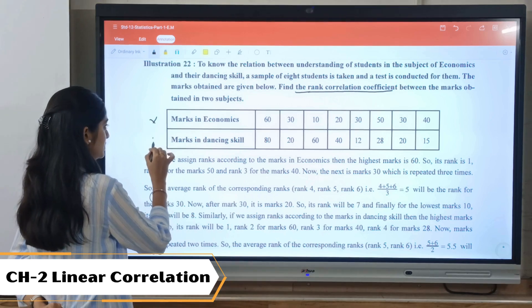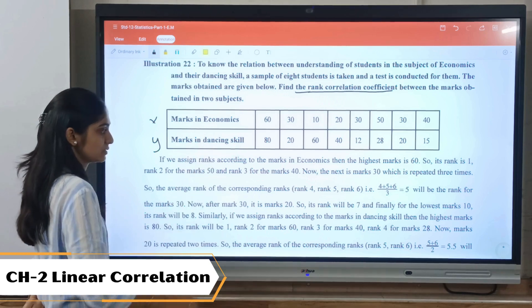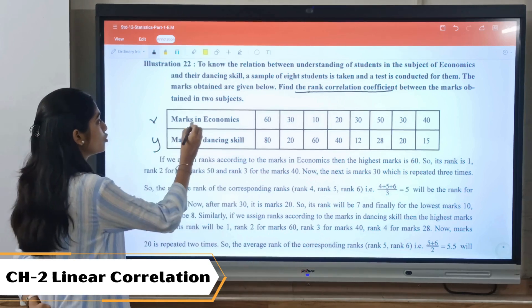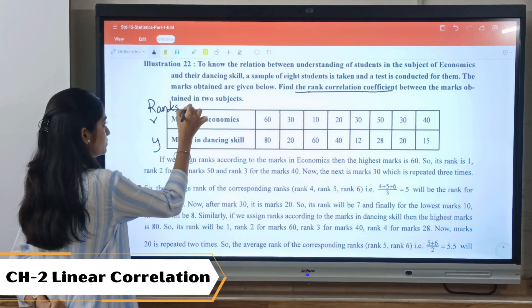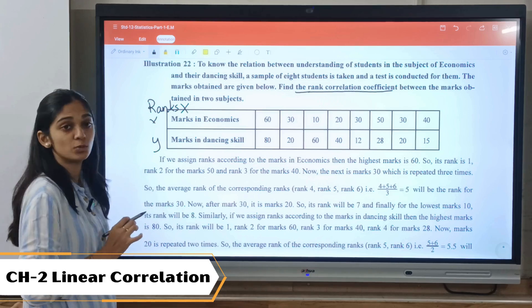Here x and y variables are given: marks in Economics and marks in dancing skills. Here they have not given us ranks, just the value of variables are given. So first we need to find out the rank.